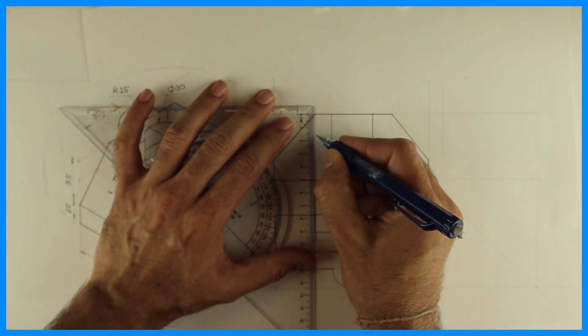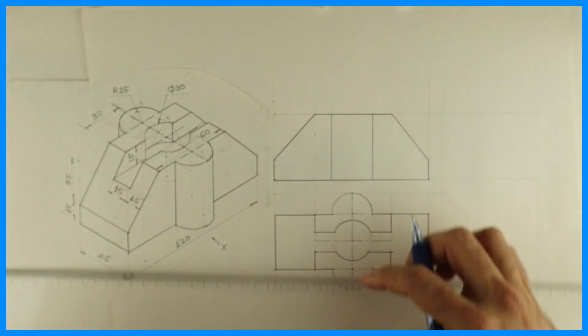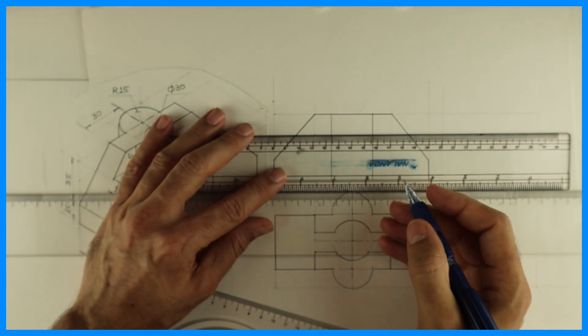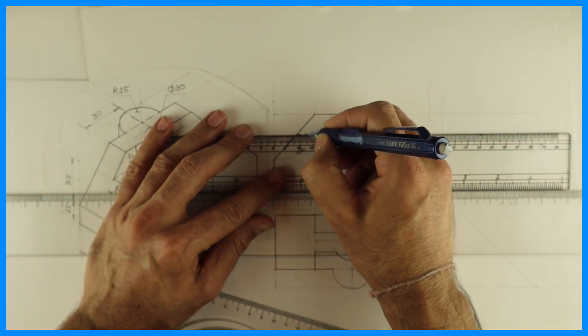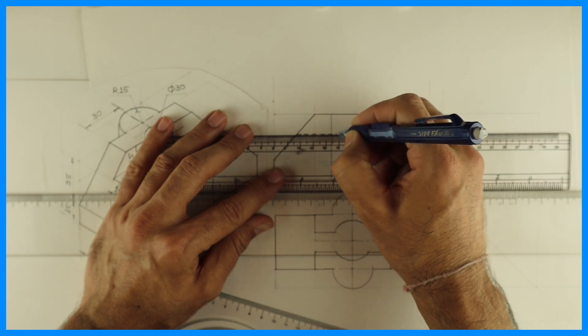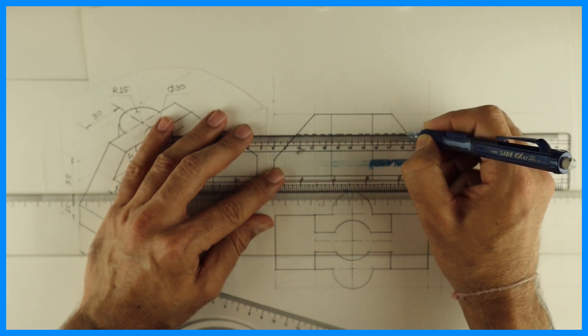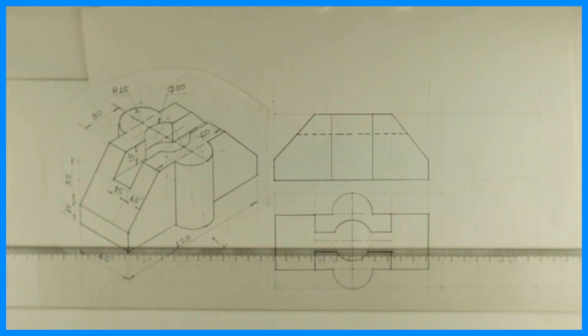Then height is 15, so you take 15 down. Draw dotted line. So this will be dotted in front view, and that we can project in top view.